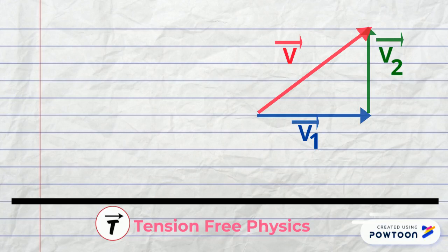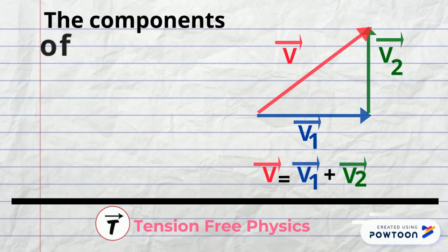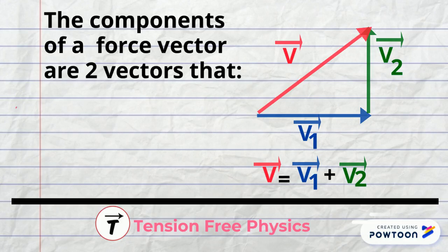We say that the two vectors v1 and v2 are the horizontal and vertical components of vector v. The components of a force vector are two vectors that add up to the given vector and are perpendicular to one another.